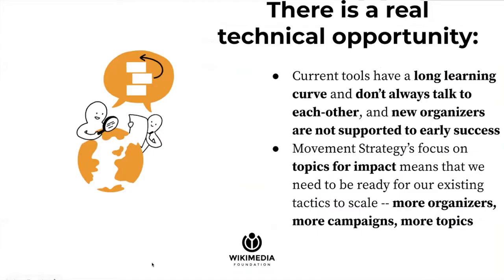As we think about this, we're really excited to have a technical and software opportunity right now, because the tools we have now are not adequate for that scale of campaign. We've made do for a long time with volunteer or community-built tools, but it's not the level of sophistication needed — especially as movement strategy asks us to work on topics for impact at scale. We're going to see more organizers, more campaigns, more topics, which means we need better and more consistent tools that set new organizers up for success.